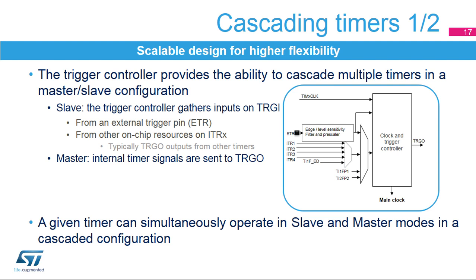In master mode, the timer can redirect multiple internal control signals to an on-chip TRGO trigger output. In slave mode, it gathers multiple inputs on the TRGI, the main trigger input, coming from the external trigger pin, or ETR, or from one of the four internal trigger inputs, ITR1 to ITR4, connected to the other TRGO outputs.